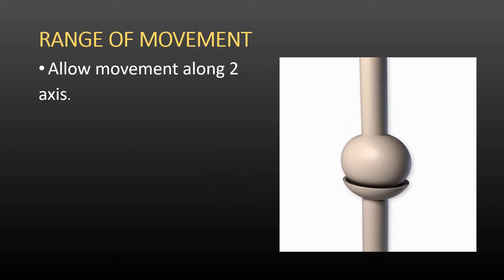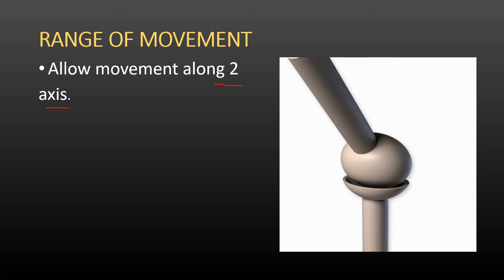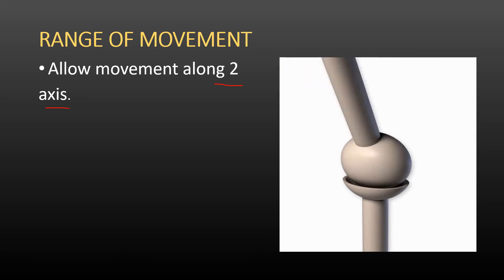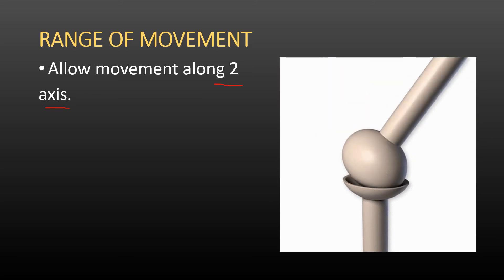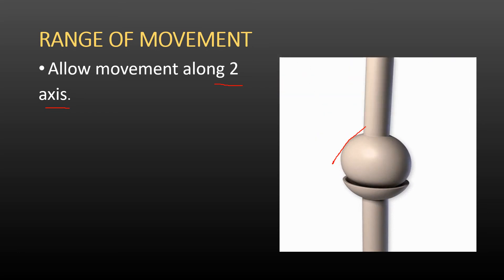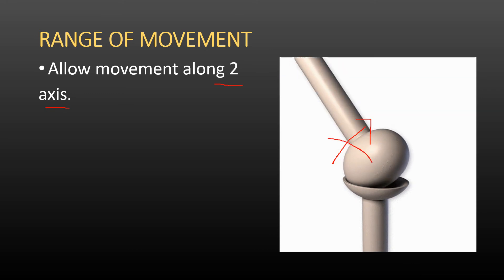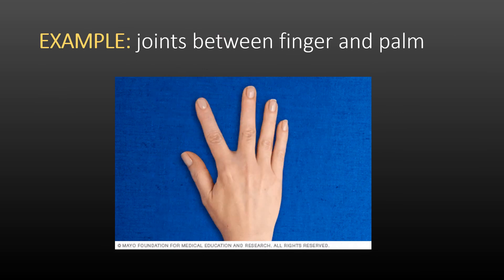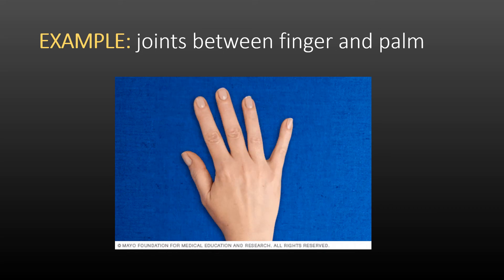If we talk about the range of movement of the condyloid joint, it allows movement along two axes. Two-axis movement means the condyloid joint gives movement in the upward and downward direction and also from side to side. As you can see in this diagram, the bone carrying the condyloid joint can move up and down and also from the right side to the left side.